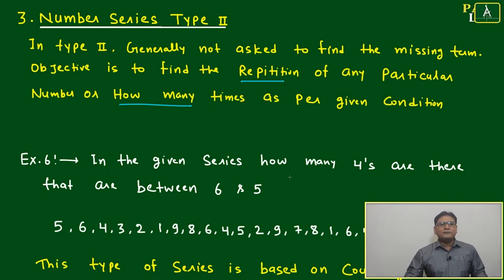In the given series, how many fours are there that are between six and five? Multiple fours will be there, but you don't need to count all fours. Only find which fours are between six and five exactly.